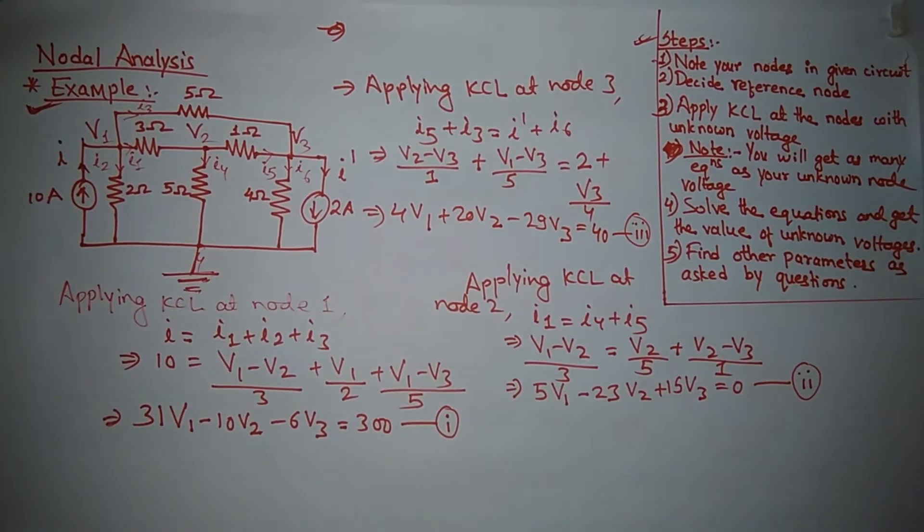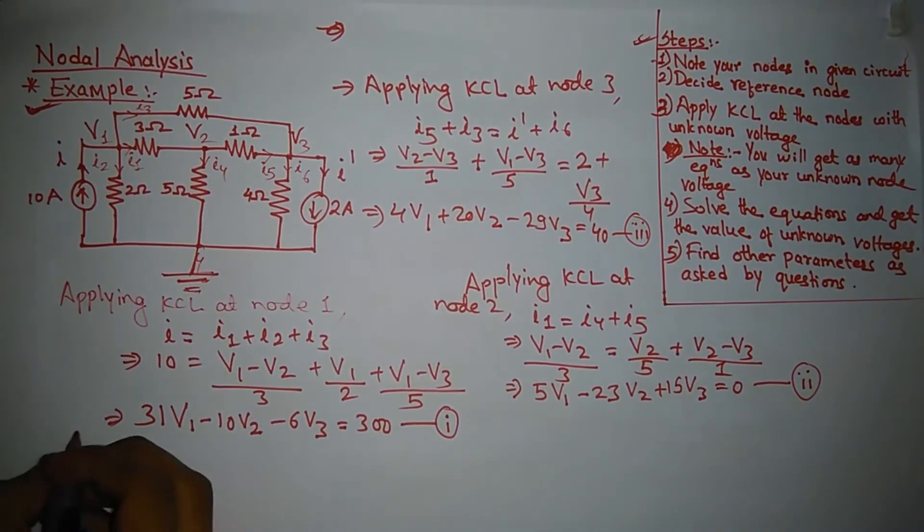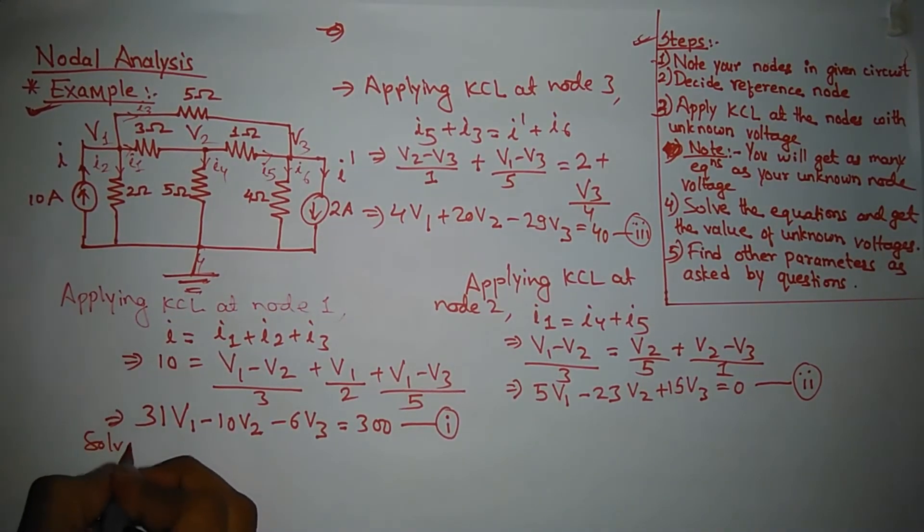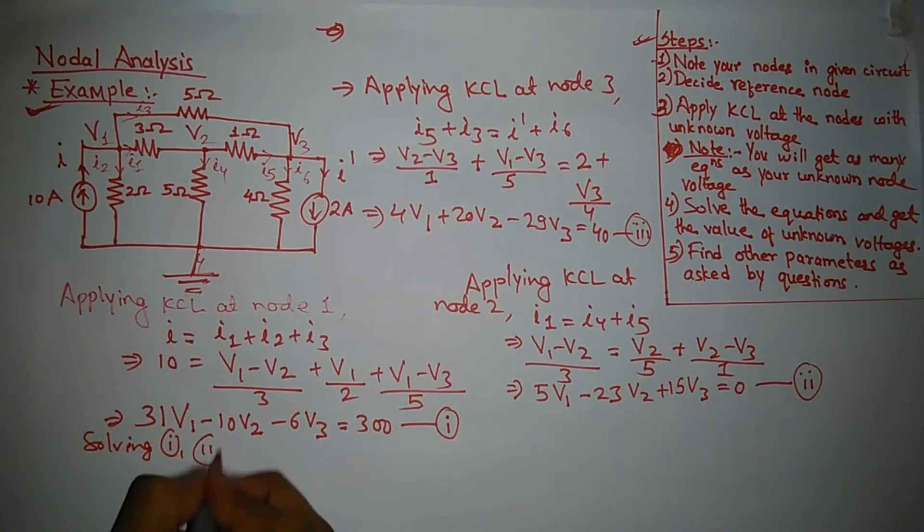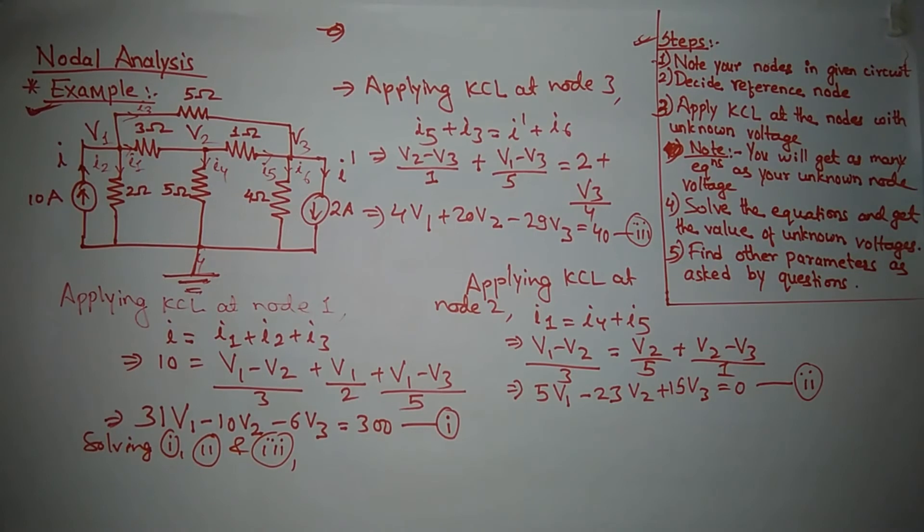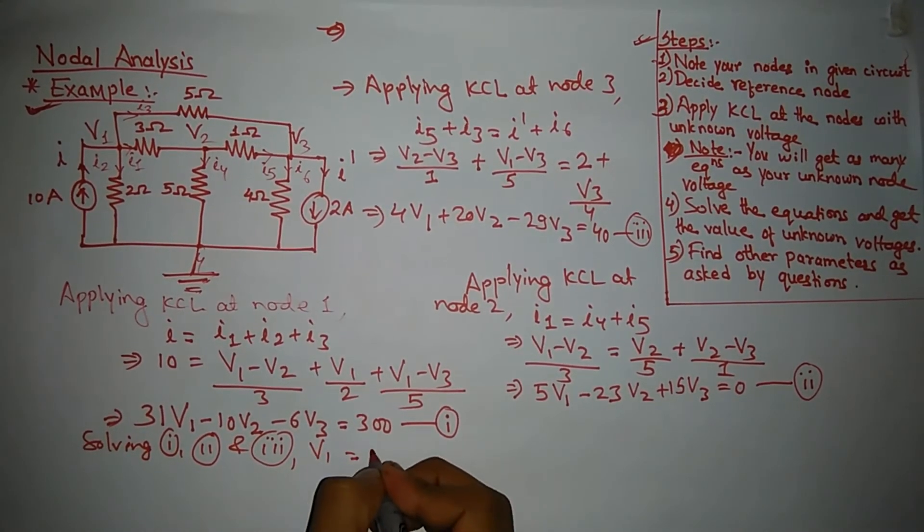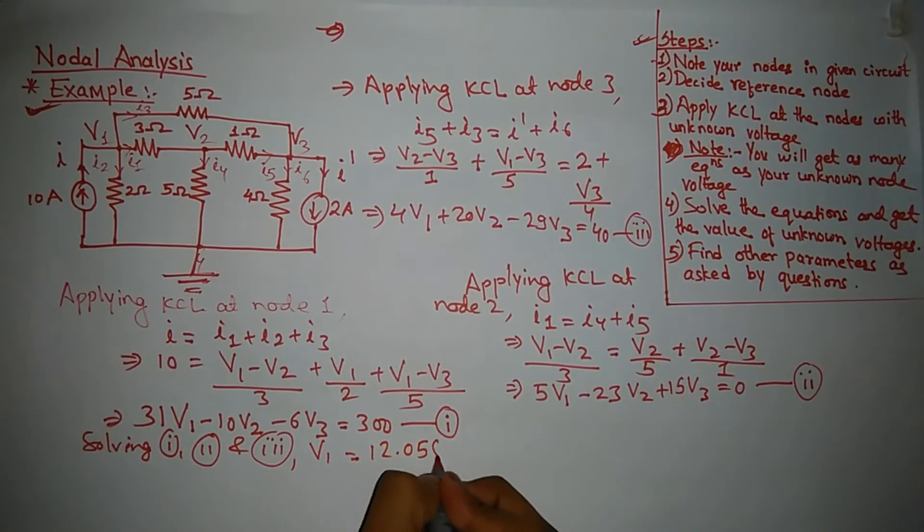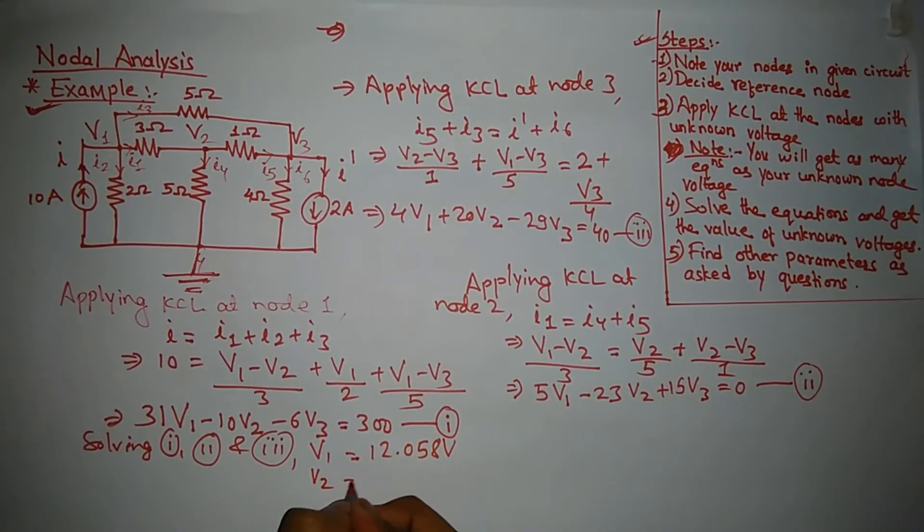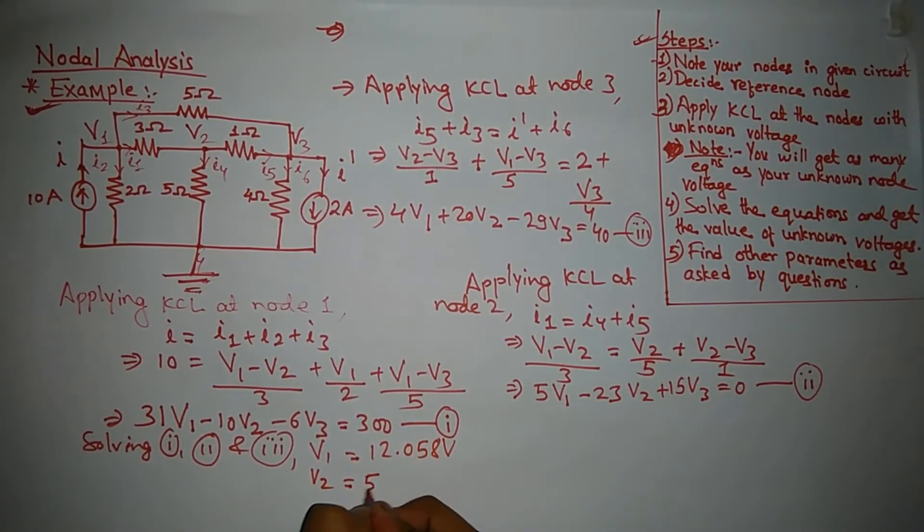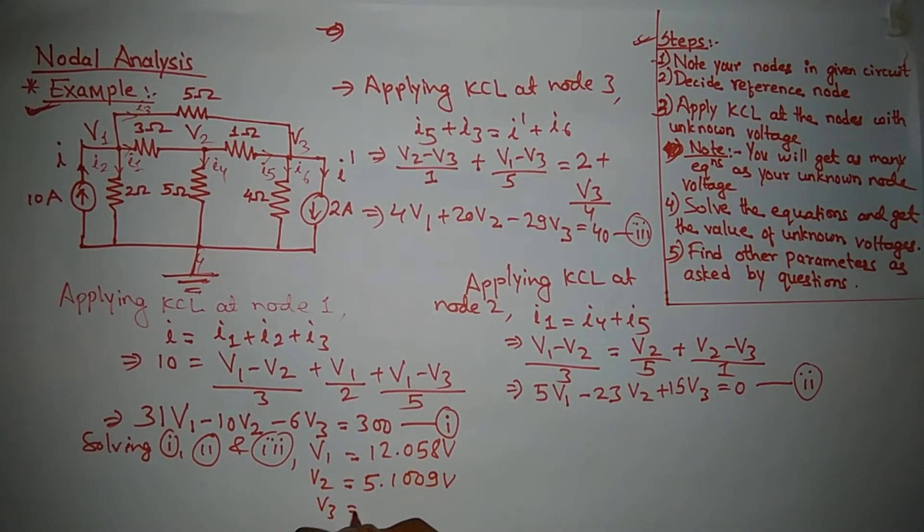Use your calculator to solve this equation. You can use your calculator and you will get the value of V1 is equal to 12.058 volt, V2 is equal to 5.1009 volt, and V3 is equal to 3.901 volt.